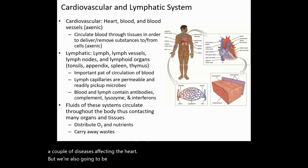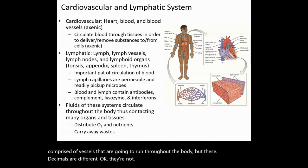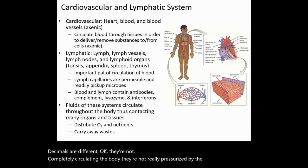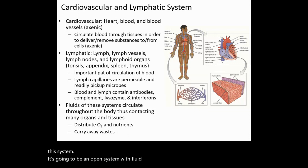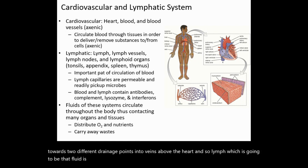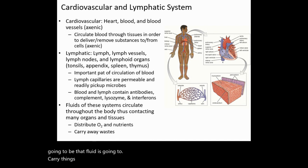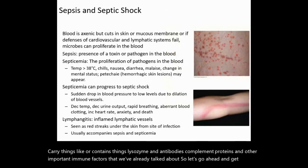We're also going to be talking about the lymphatic system, which is comprised of vessels that run throughout the body. These vessels are different — they're not completely circulating the body and they're not really pressurized by the heart. Instead, this system is going to be an open system, with fluid moving in a single direction from the extremities toward two different drainage points into veins above the heart. Lymph, which is that fluid, is going to contain things like lysozyme, antibodies, complement proteins, and other important immune factors that we've already talked about.